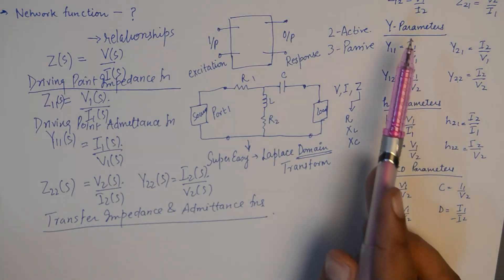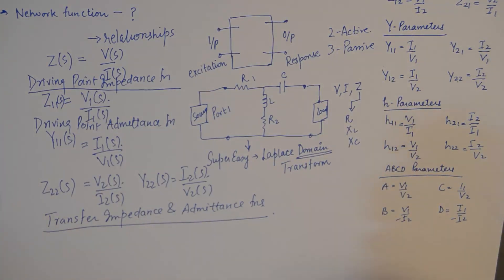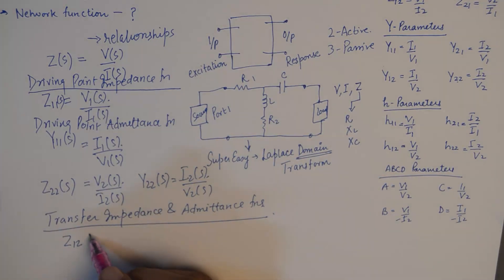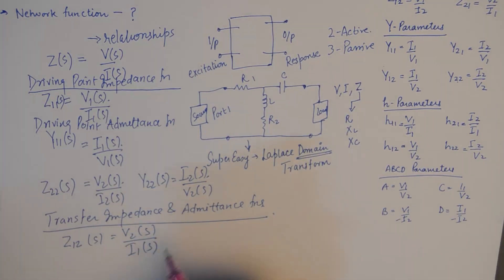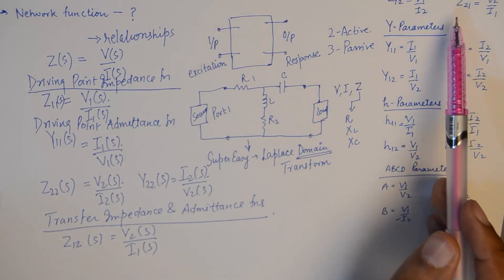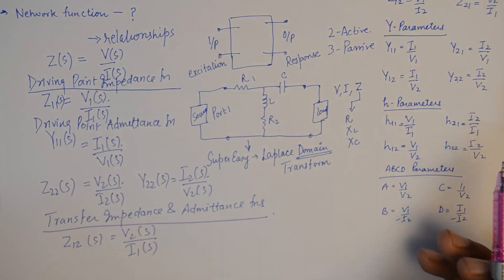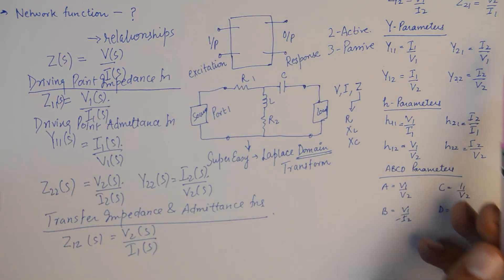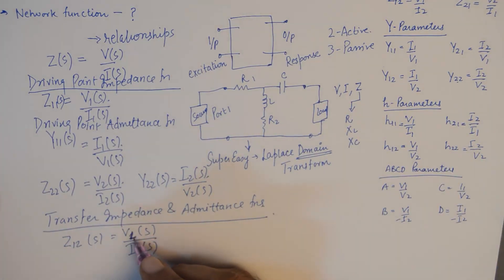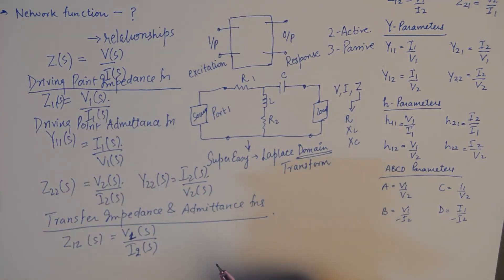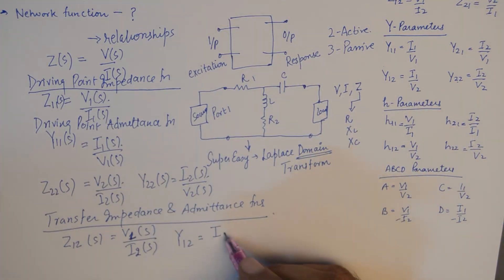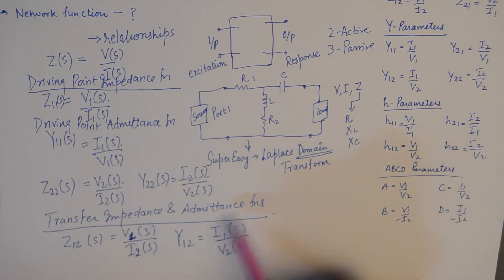Transfer impedance and admittance functions also take their definitions directly from Z and Y parameters — you do not need to know any new nomenclature. Z12 is known as the transfer impedance function and is the ratio V2(s) over I1(s). Z21 corresponds to V1(s) over I2(s). Y12 is the ratio of I1(s) to V2(s). These transfer impedance and admittance functions come directly from the Z and Y parameter definitions.